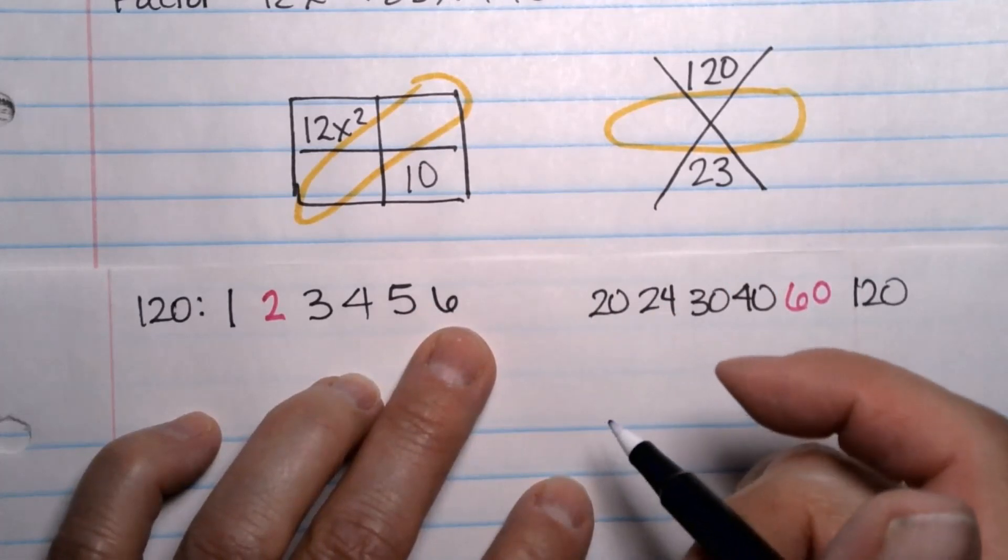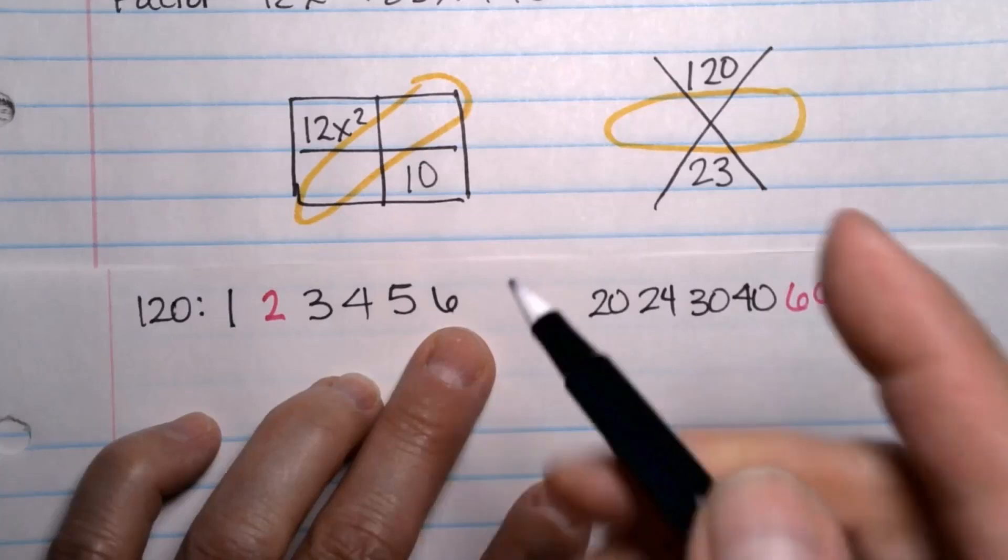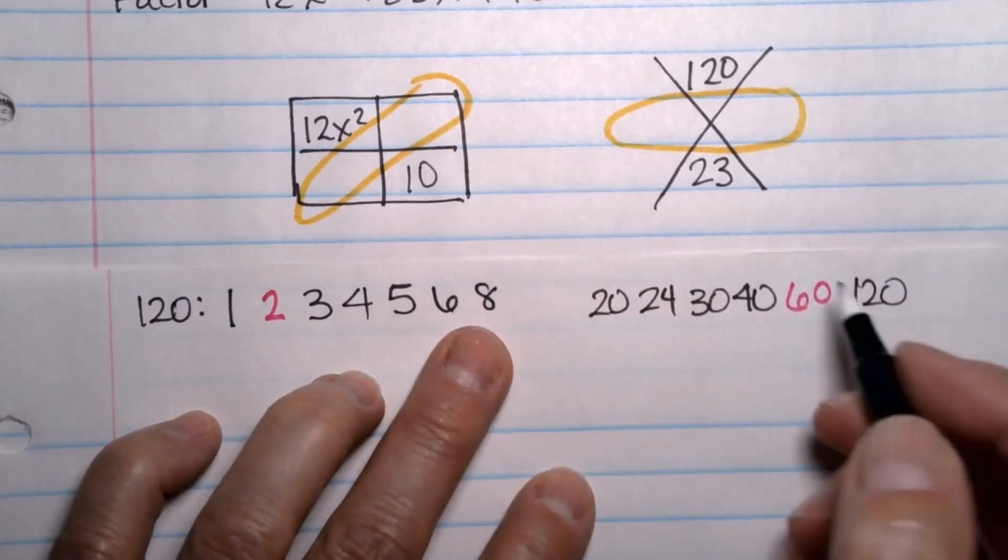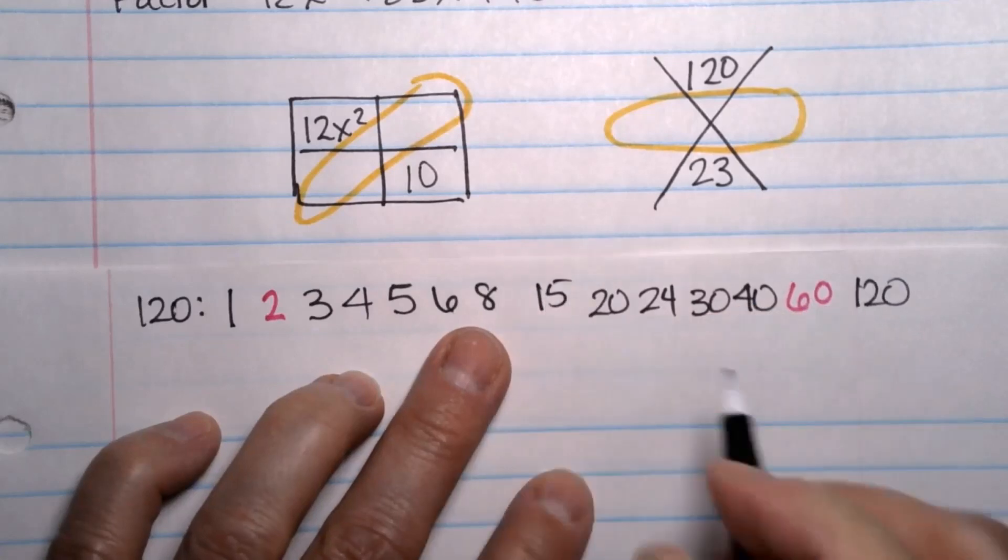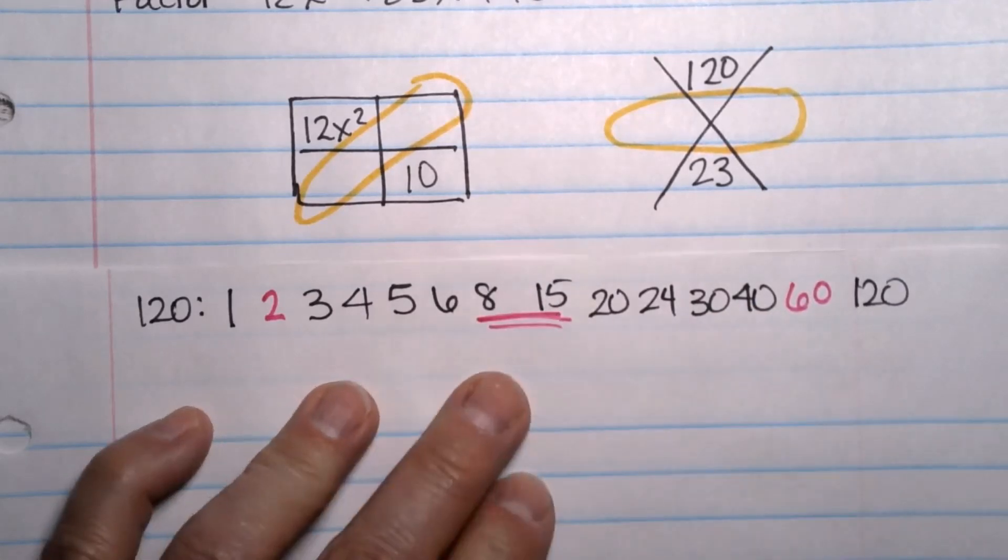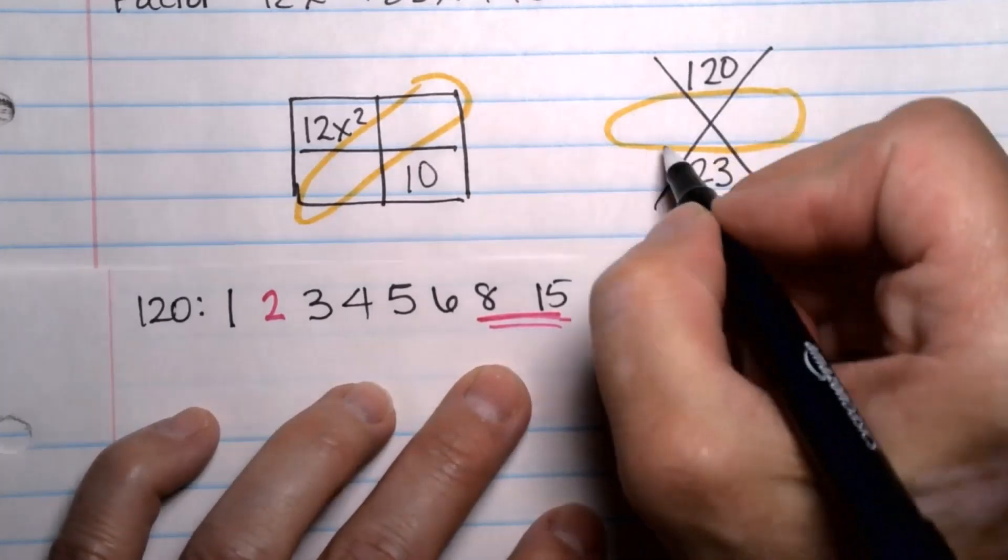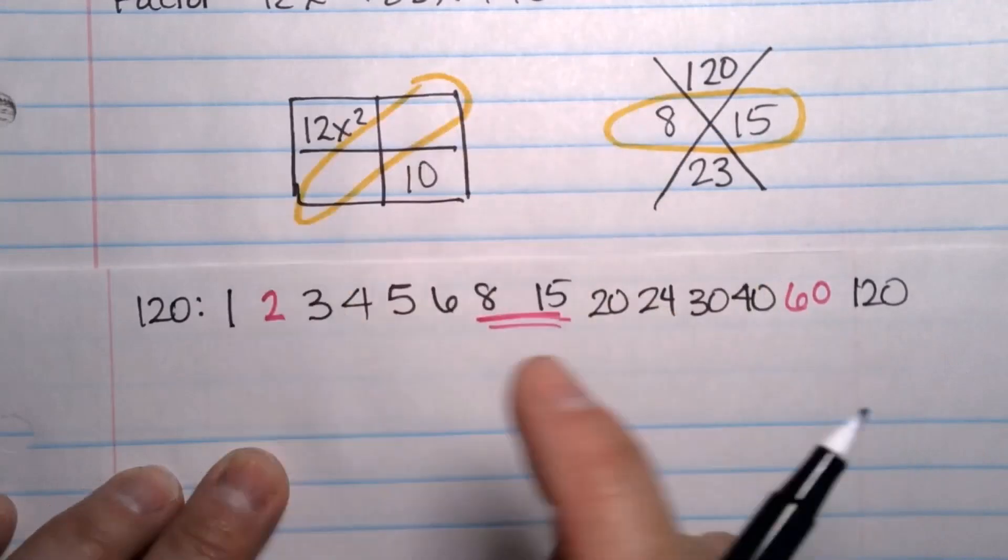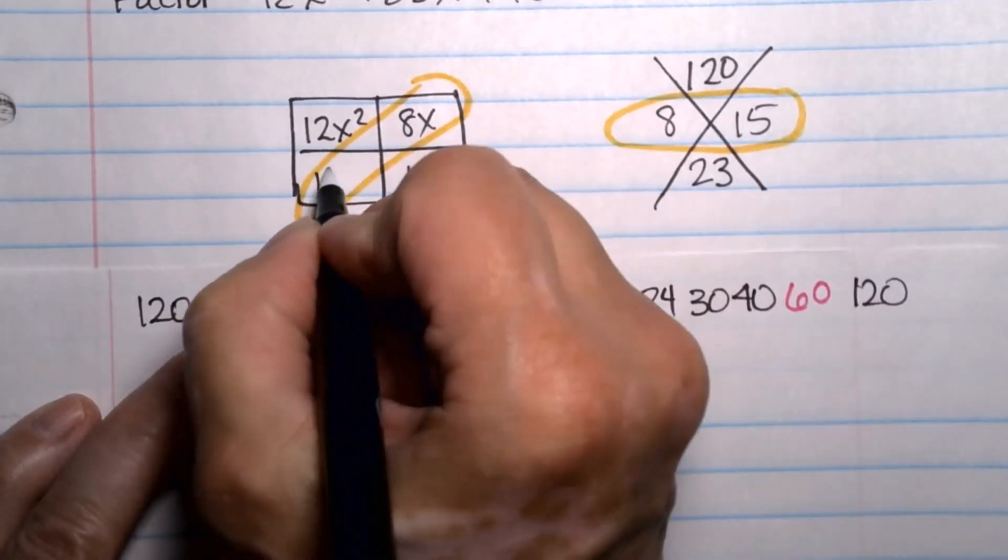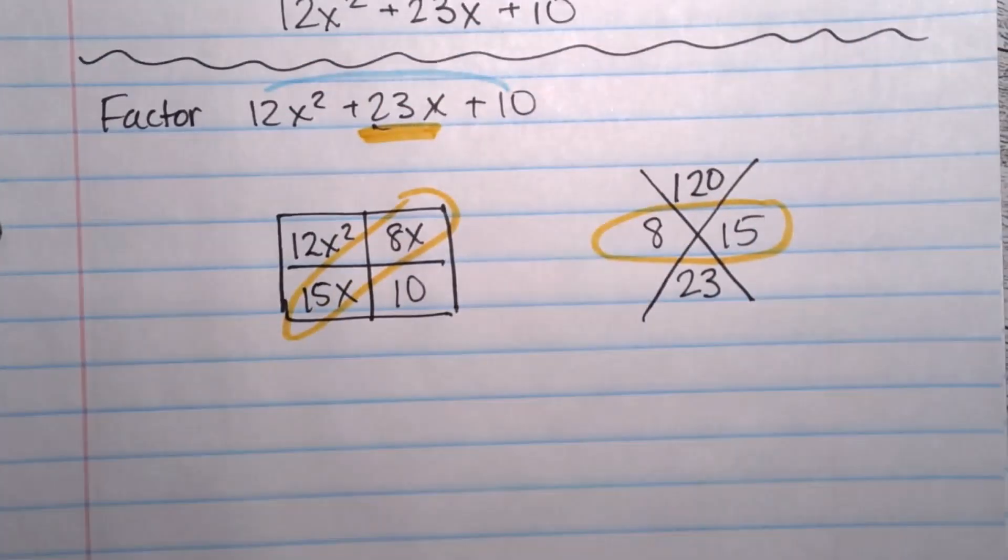So then you need to keep going. And after six, I tried an eight. I took 120 and divided it by eight and I got 15. And yeah, that's just kind of how it works sometimes. There it is. Those two things added together would equal 23. So this would be an eight and this would be a 15. Those are the two numbers. So I'm going to put an 8X here and I'm going to put a 15X here because they have to add up to 23X.